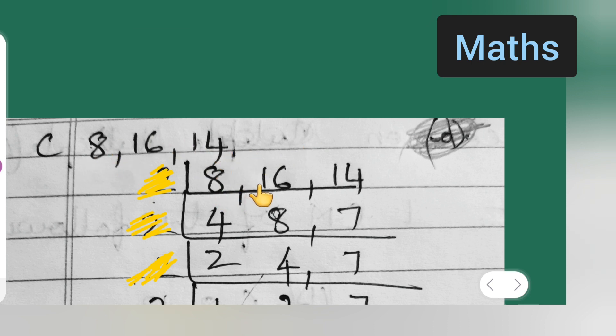So first I'll have to plug the values 8, 16, and 14 as it is, whatever is given. Now in which table do we get this 8, 16, and 14? In the table of 2. Then what I'll have to do over here is 2 fours are 8, 2 eights are 16, 2 sevens are 14.